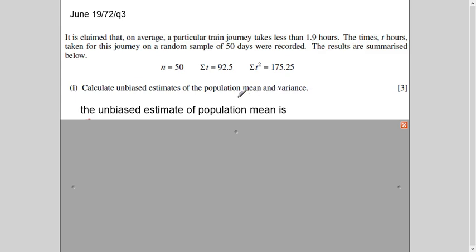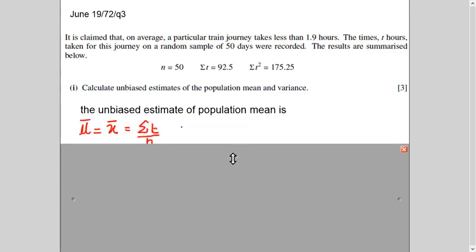Now you need to understand what is unbiased estimate of population mean and variance. Whenever the population mean and variance is not given to you and you find it out or estimate it with the help of sample, then it is called unbiased estimate of the population mean and variance. So the formula for the unbiased estimate of the population mean is the same. So population mean and the one you calculate with the help of sample, the formula is sigma t over n. Sorry, I have written here x, it should be t here because I'm talking about this variable which is used here.